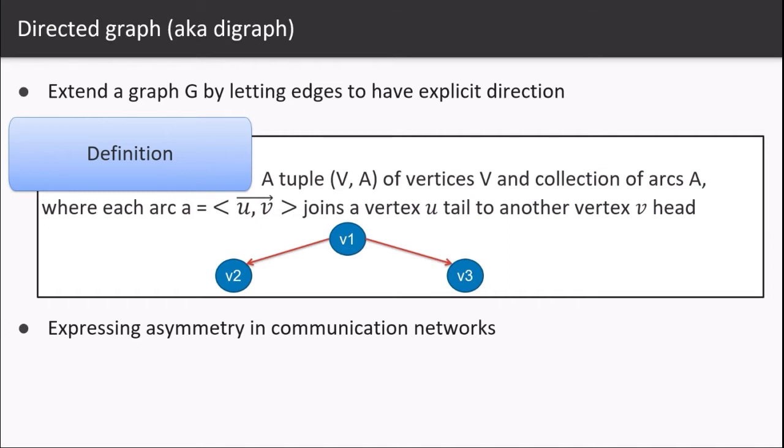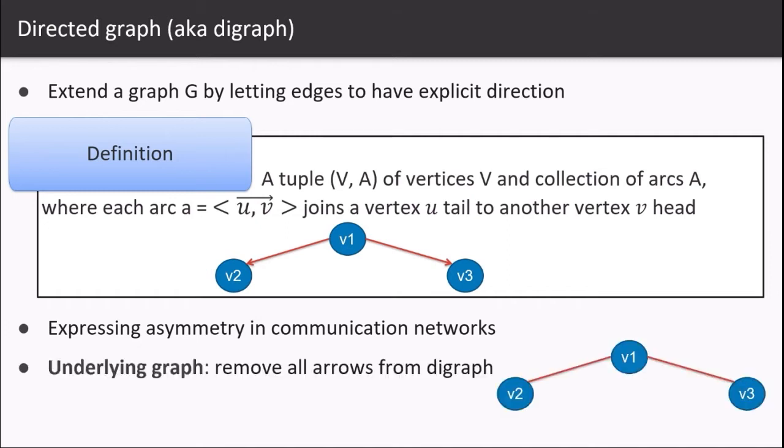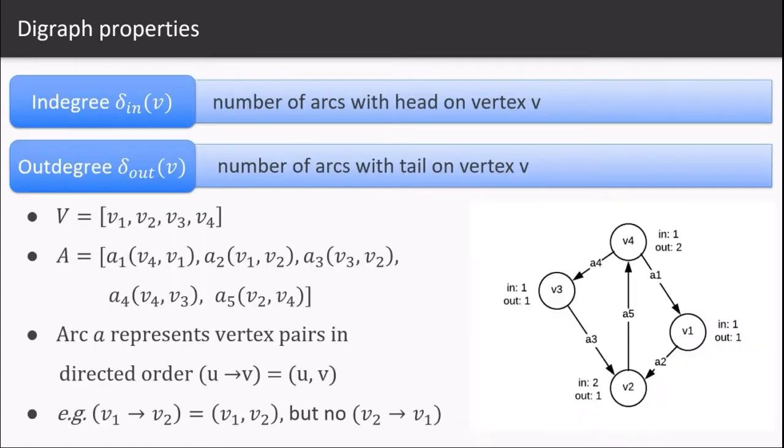An underlying graph is the one which is produced by removing all the arrows from the directed graph. Looking at some properties of the digraph, in here we have in-degree and out-degree. The number of arcs with the head on the vertex v are in-degrees and the number of arcs with the tail on the vertex is known as out-degree.